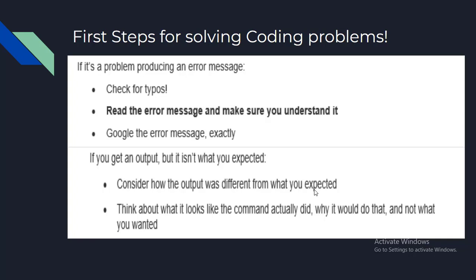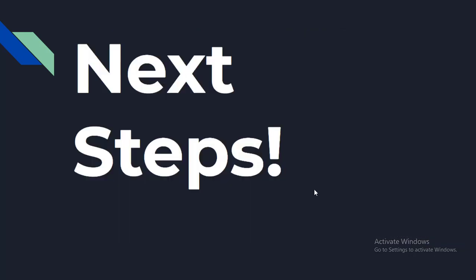Now you have done everything you are supposed to do to solve the problem on your own — you need to bring in the big guns. That means finding a peer with some experience with what you are working on and asking them for help or direction. This is often great because the person explaining gets to solidify their understanding while teaching it to you, and you get a hands-on experience. In this class, your peers can be classmates, and you can interact through the comments below.